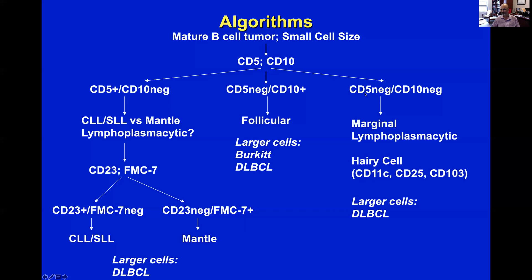On the other side of the algorithm, if you're CD5 and CD10 negative, you're either a marginal zone lymphoma, a lymphoplasmacytic lymphoma, or a hairy cell leukemia — we have specific markers to rule in hairy cell leukemia. The third possibility is CD10 positive: if you have really small cell size, you essentially have a diagnosis of follicular lymphoma. If you have larger cells, entertain Burkitt lymphoma and of course diffuse large B-cell lymphoma, which can do whatever phenotype it wants. We use these markers in an algorithm to determine the type of DLBCL.